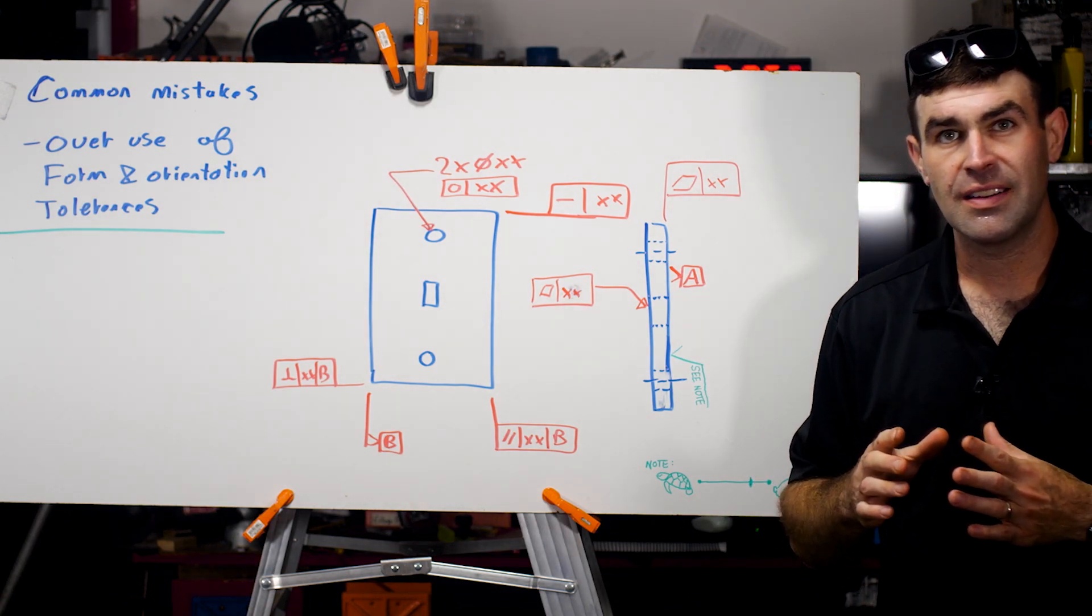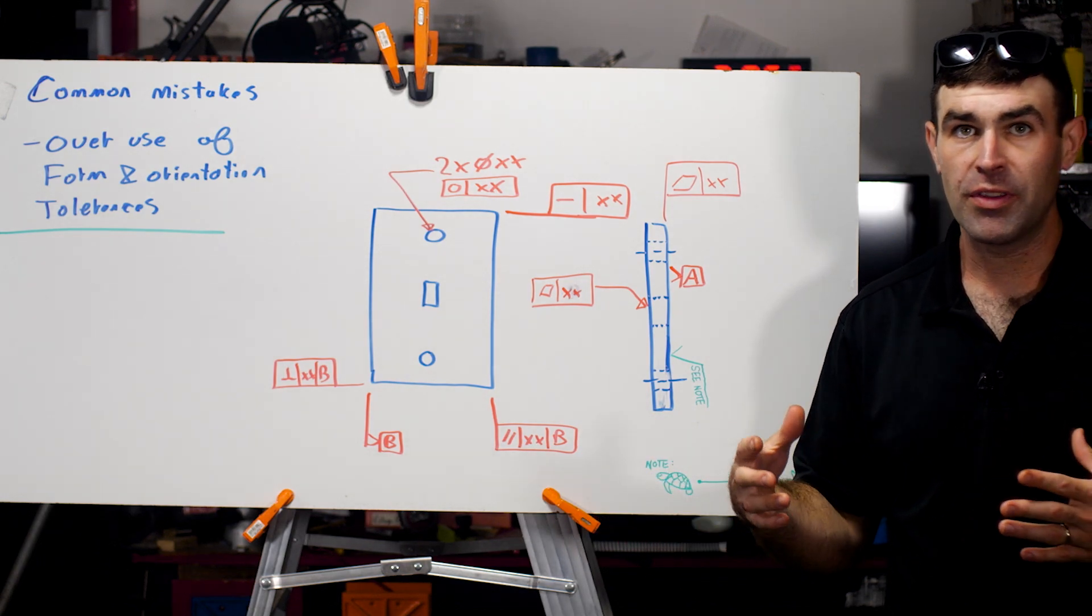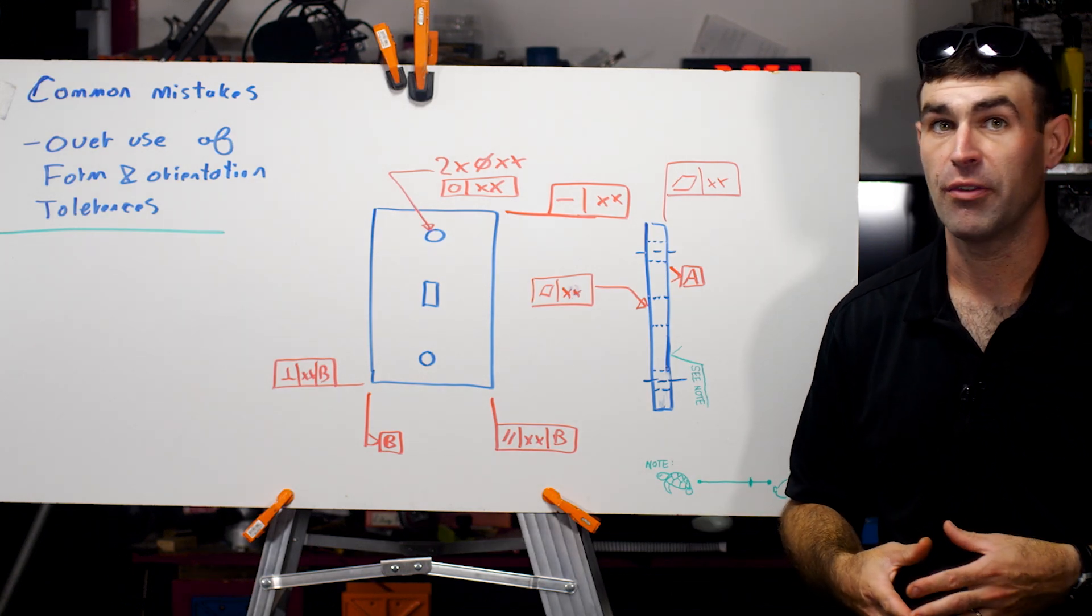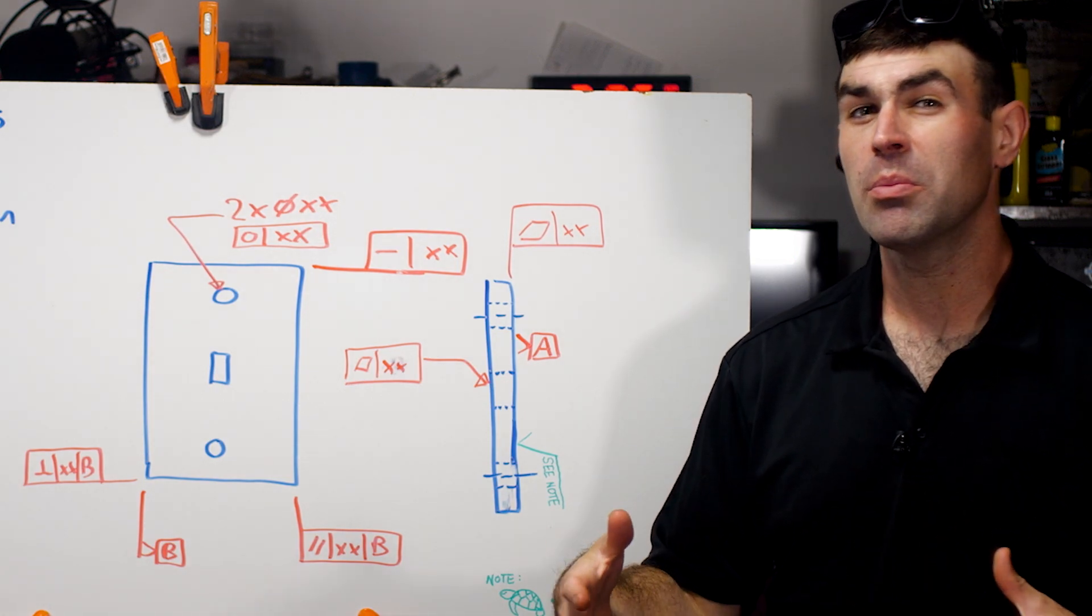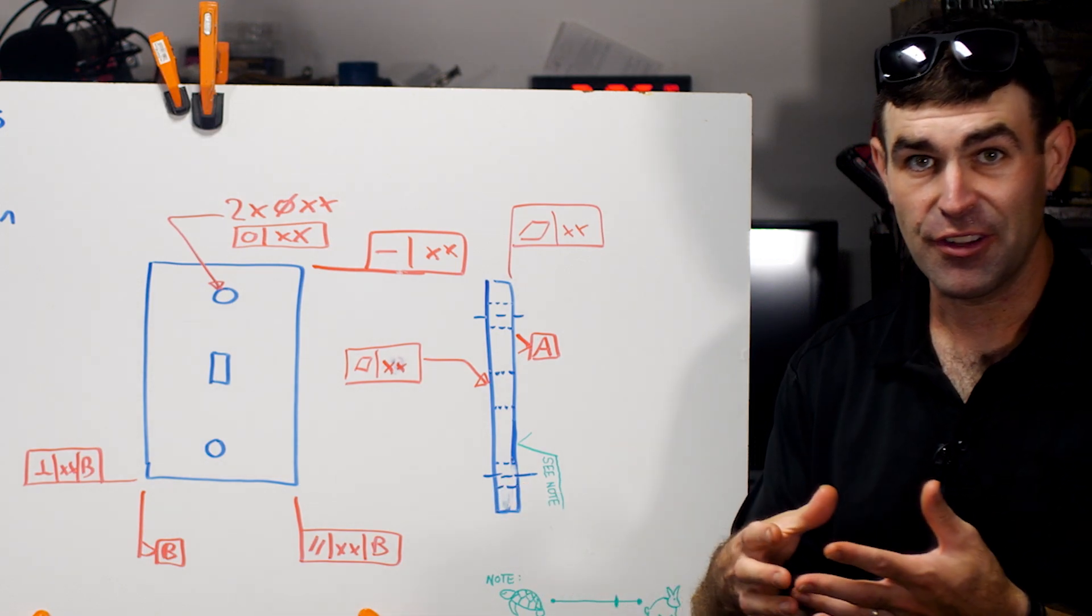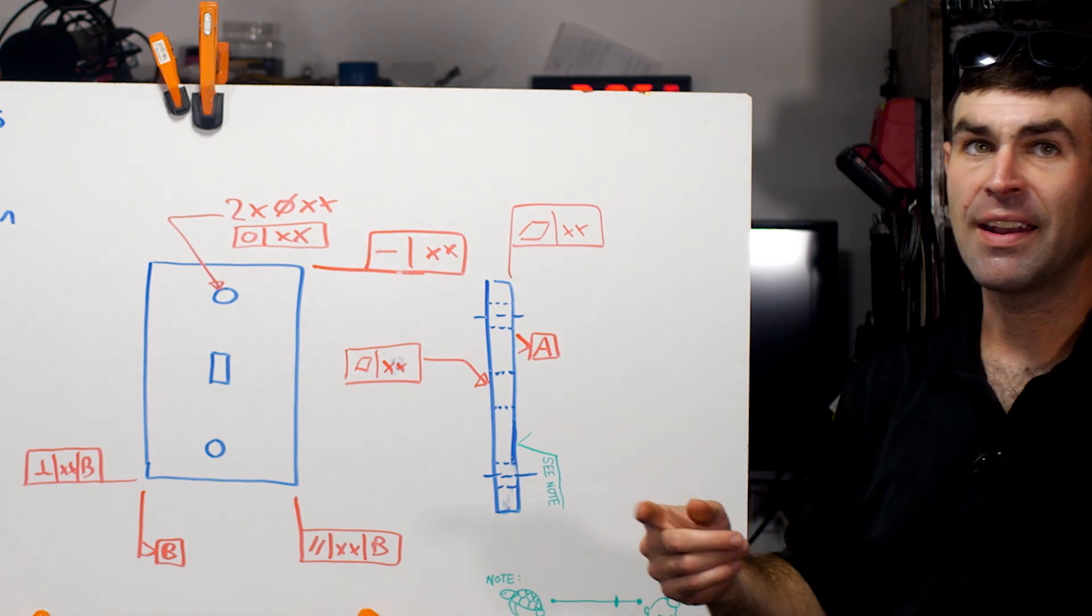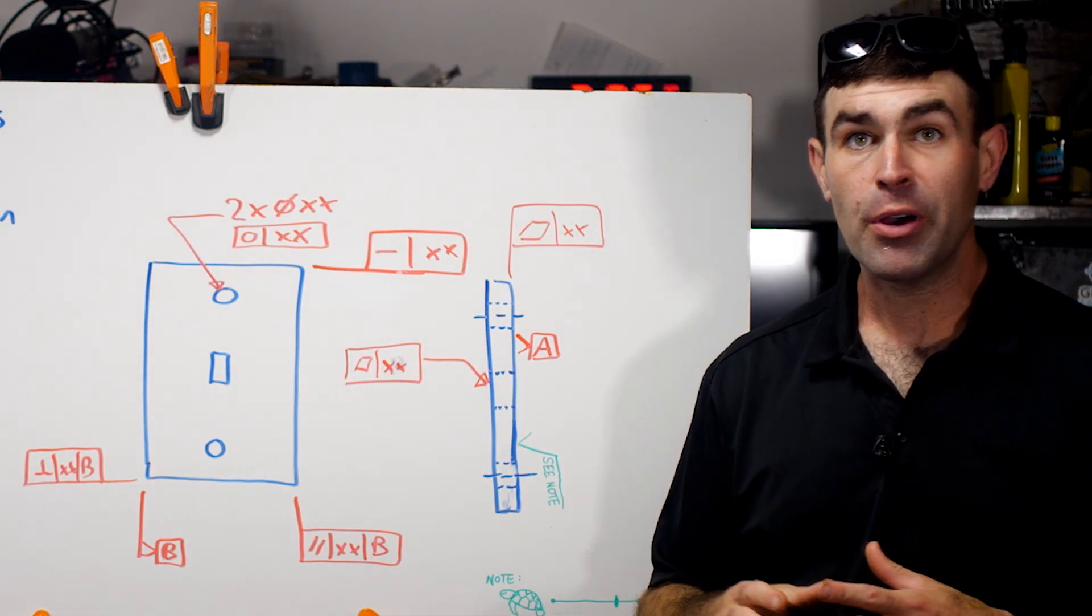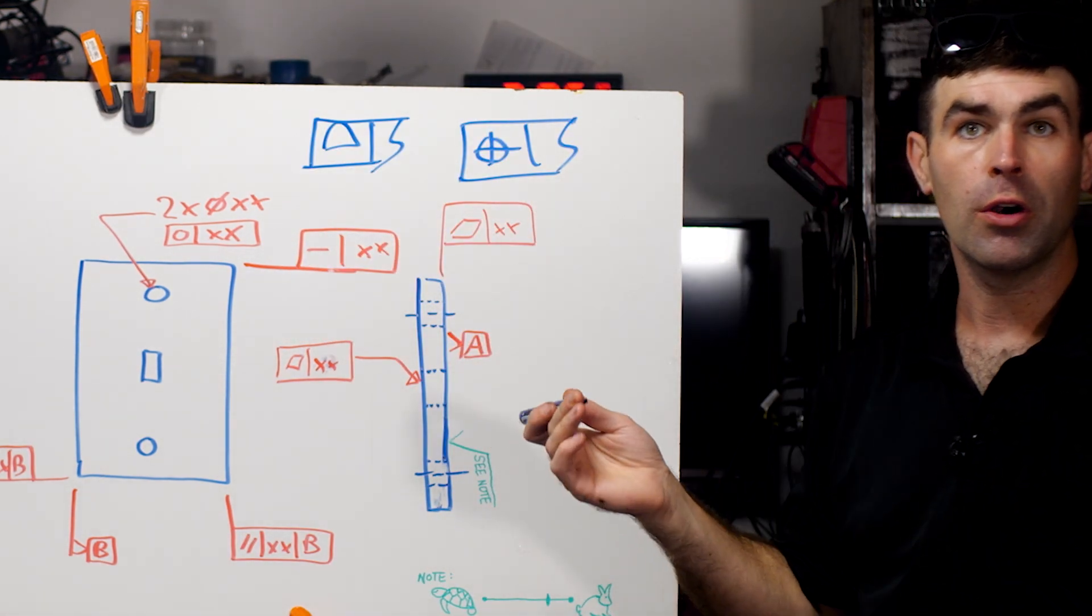One issue with the GD&T system is that it's a language of symbols. Some of the symbols that are the easiest to understand on a logical level, if I point to this symbol and say that's a symbol for straightness, you can more or less understand what that means. You're going to keep a feature straight within whatever a tolerance is. Same thing with flatness or circularity.